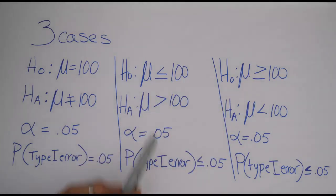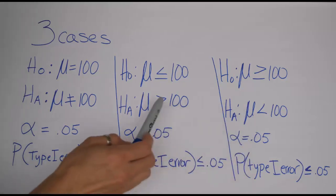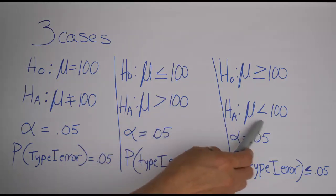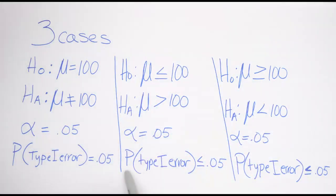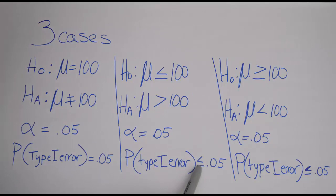Now in these other two cases they're actually both the same in that the alternative hypothesis that's being used is basically indicating a right-tailed test or a left-tailed test, or in other words just a one-tailed test, and in those scenarios the probability of a type 1 error is less than or equal to the alpha for the problem.